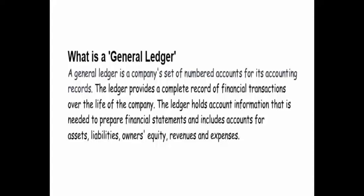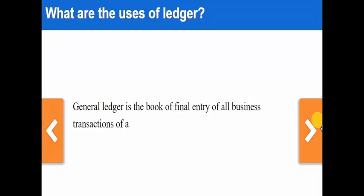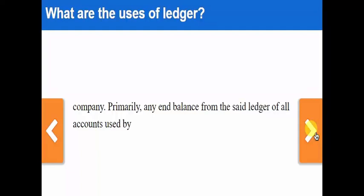I am Shahriya Rabdi and my ID is 151155424. Today I am going to tell you about the general ledger. A general ledger is a company's set of numbered accounts for its accounting records. The ledger provides a complete record of financial transactions over the life of the company. The general ledger is a book of final entry for all business transactions of the company.